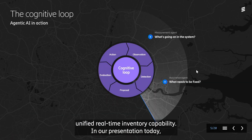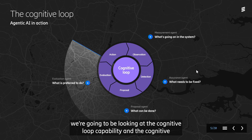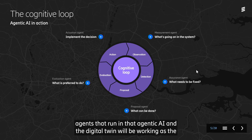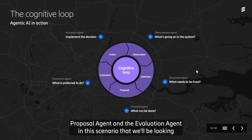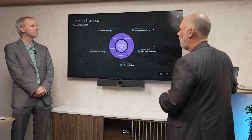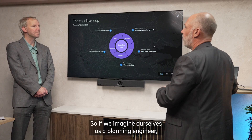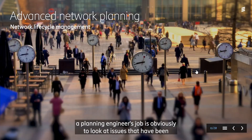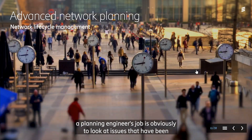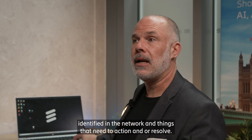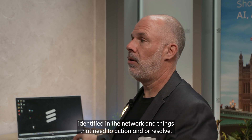In our presentation today, we're going to be looking at the cognitive loop capability and the cognitive agents that run in that agentic AI. The digital twin will be working as the proposal agent and the value agent in this scenario. If we imagine ourselves as a planning engineer, their job is to look at issues that have been identified in the network and things that they need to action and resolve.